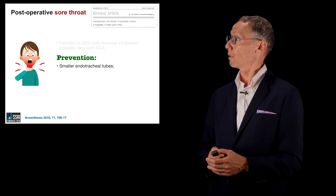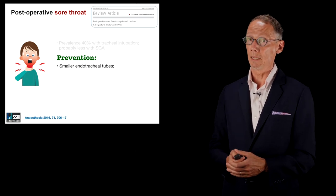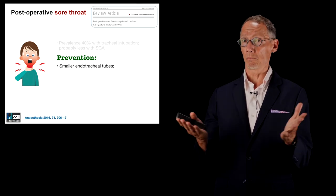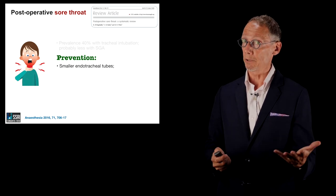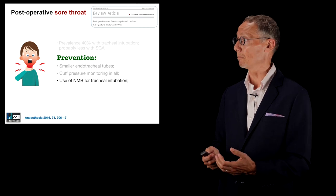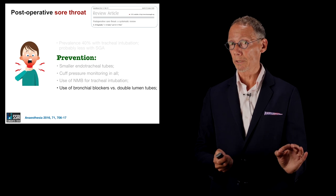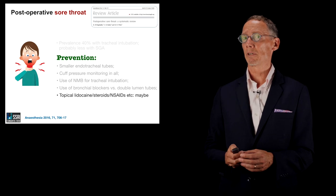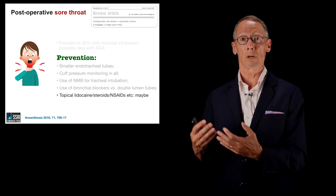A nice systematic review by Dr. Karim El-Boghdadli published in Anaesthesia 2016 identified several recommendations for sore throat prevention: use of a generally smaller endotracheal tube where possible; cuff pressure monitoring in all patients — which I do routinely for both intubated patients and supraglottic airways; use of neuromuscular blockers for tracheal intubation unless there's a good reason not to; use of a bronchial blocker instead of a double-lumen tube; and topical lidocaine, topical steroids, or topical NSAIDs, which generally show a beneficial effect.